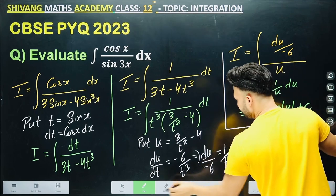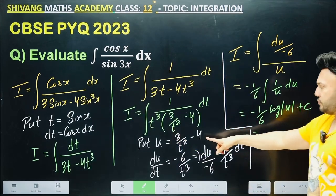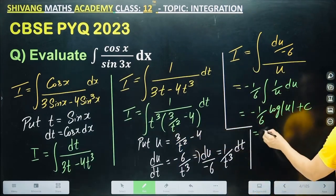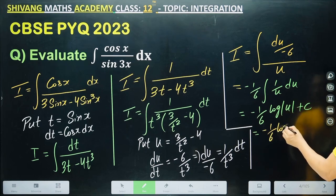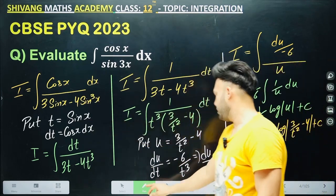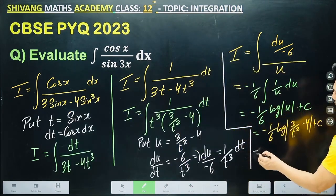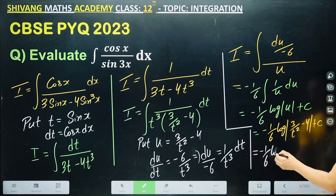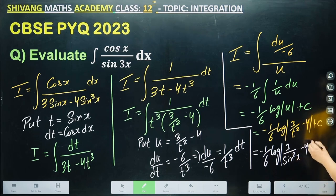u is right in front of u. 3t squared minus 4, and put the value of t here as well. t was sin x. Your final answer will be minus 1/6 log 3 sin squared x minus 4 plus C. This is also complete. I'll see you next time.